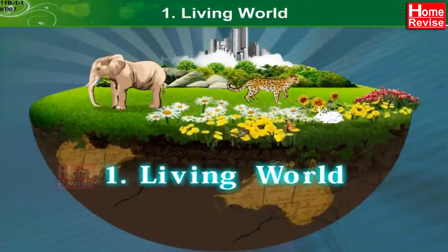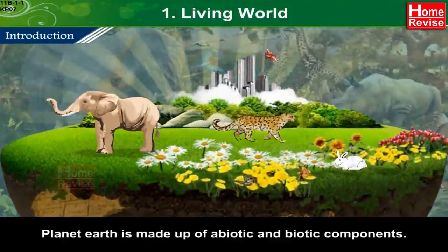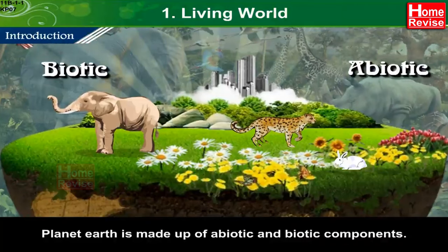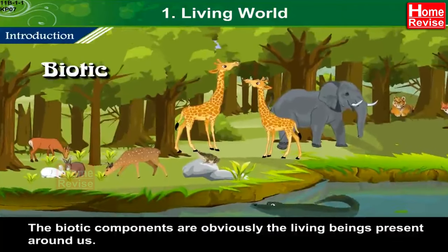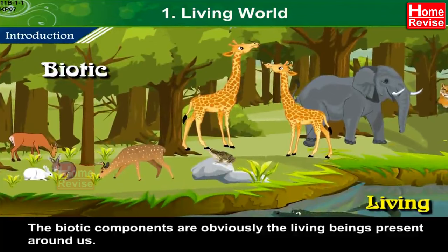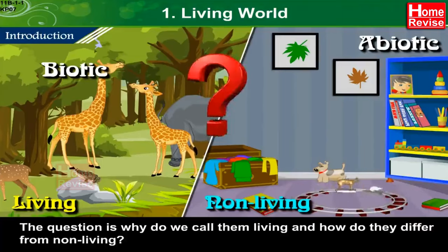Chapter 1: Living World. Introduction — Planet Earth is made up of abiotic and biotic components. The biotic components are obviously the living beings present around us. The question is, why do we call them living and how do they differ from non-living?